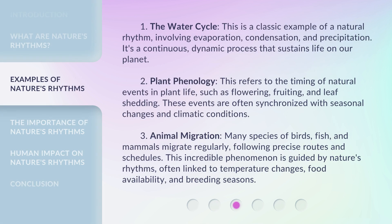1. The Water Cycle. This is a classic example of a natural rhythm, involving evaporation, condensation, and precipitation. It's a continuous, dynamic process that sustains life on our planet.